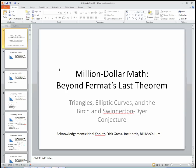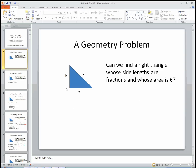So, triangles, elliptic curves, and the Birch and Swinerton-Dyer conjecture. Well, let's start with triangles. Let's start with a simple geometry problem. Can we find a right triangle whose side lengths are fractions, that is, rational numbers, and whose area is 6?